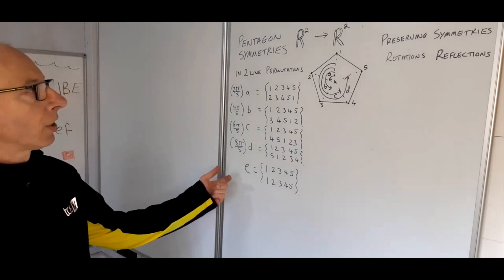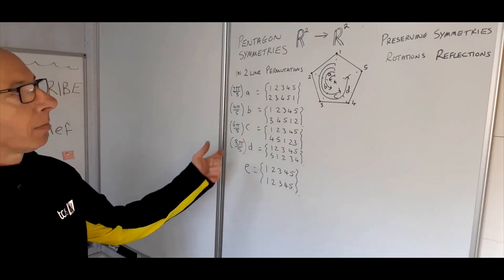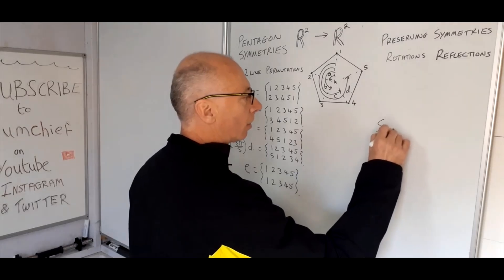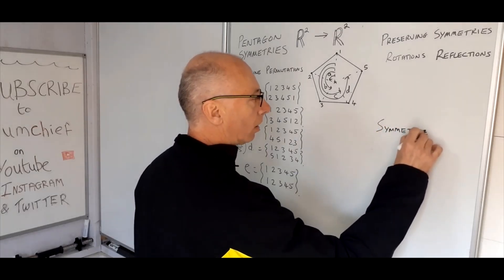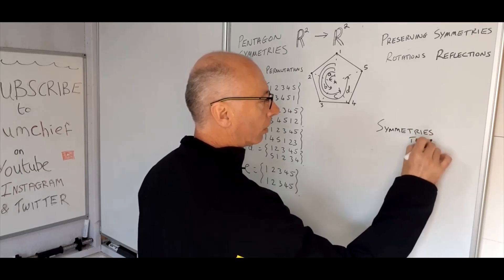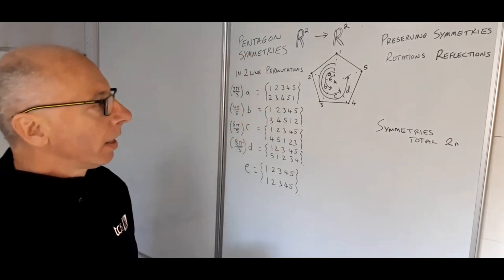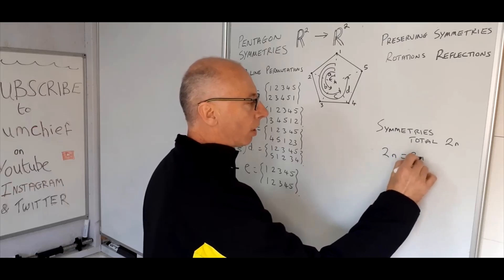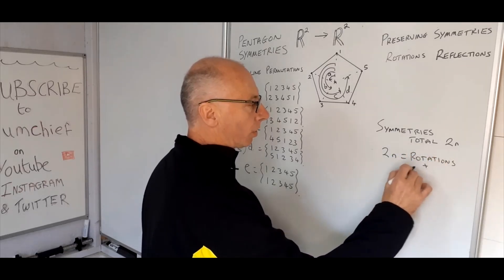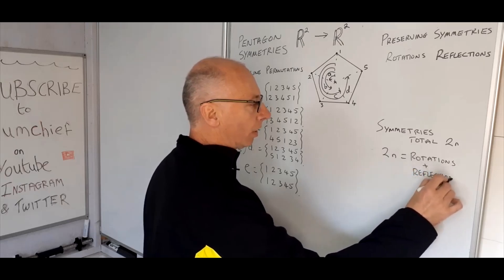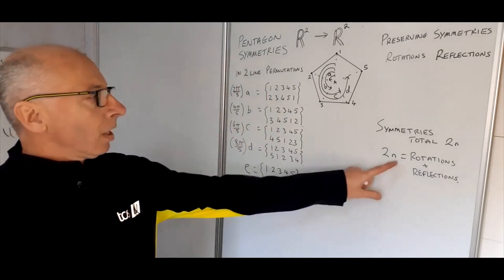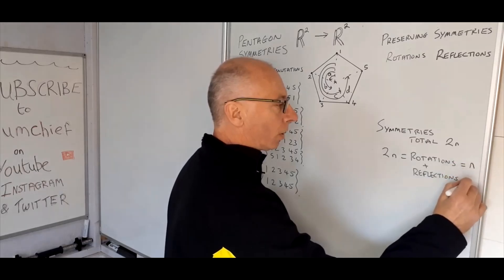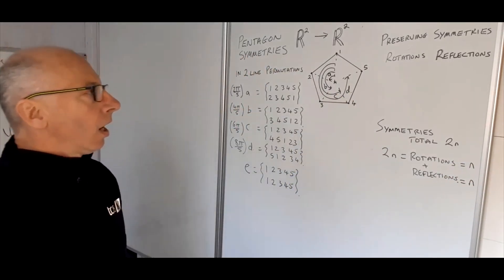That's all our rotations. We know we're correct because the total number of symmetries of any regular polygon is 2N, where N is the number of sides. That 2N is split into rotations plus reflections, and for a regular two-dimensional polygon the rotations and reflections are both equal to N — the number of sides.